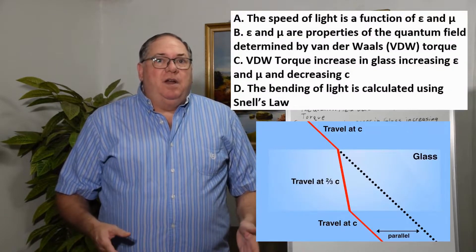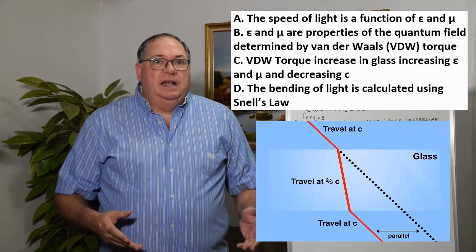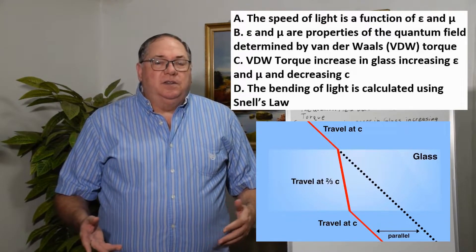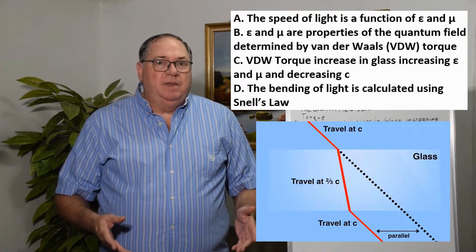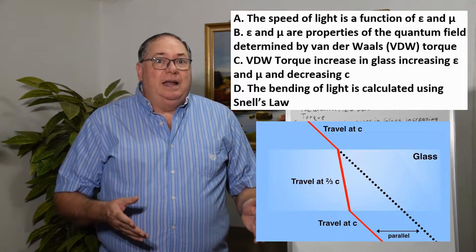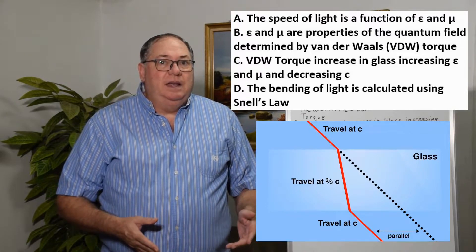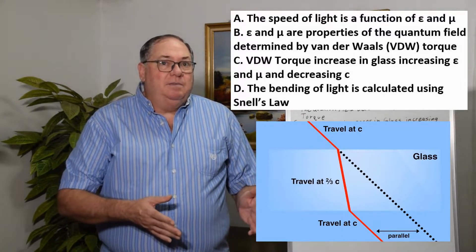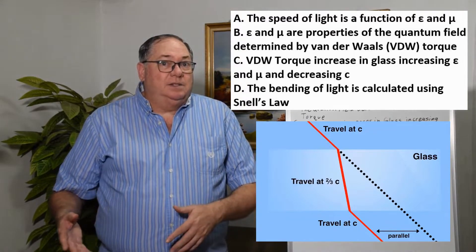He got it wrong because he took the bias that there is no quantum field, so there is no derivation of the quantum field. In order to get the right solution, you have to figure out why the speed of light is what it is in the quantum field and then apply what you learn there to what happens in glass or water.